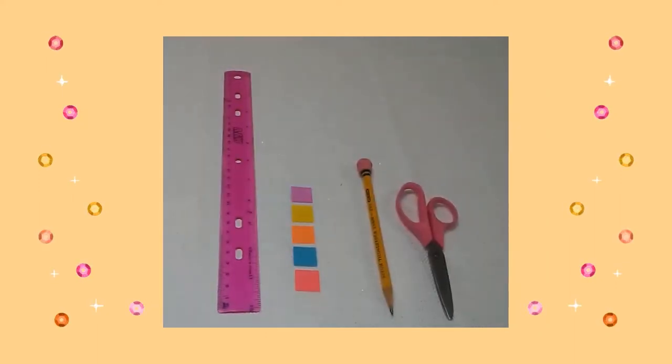Then I drew half-inch by half-inch squares on red, blue, orange, yellow, and purple cardstock. Then I cut out the squares.